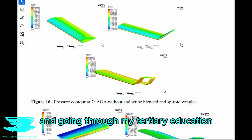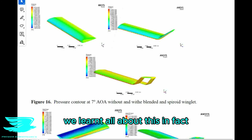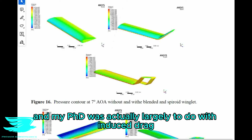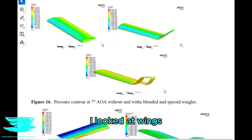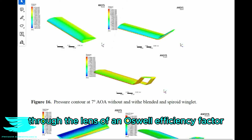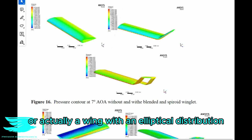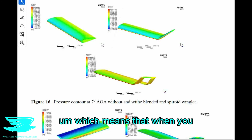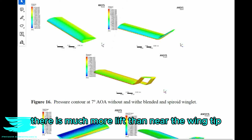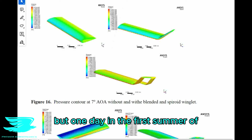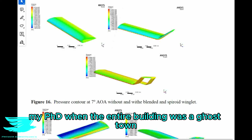Going through my tertiary education, we learned all about this. In our aeronautical classes, this was a major feature. Then I started my PhD, and my PhD was actually largely to do with induced drag. When I started, I looked at wings through the lens of an Oswald efficiency factor, because that's what I knew. The elliptical wing — or more accurately, a wing with elliptical lift distribution — means that near the root there is much more lift than near the wingtip, which is where the lift drops off to zero.